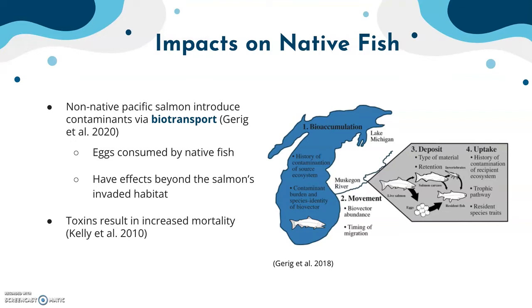In a study in the Great Lakes in Lake Michigan, the Pacific salmon were introduced rather than naturally invasive. But there was still bioaccumulation of contaminants from the introduced Pacific salmon, and this ends up having effects outside of the salmon's invaded habitat because both the salmon and the smaller fish move, resulting in bioaccumulation in surrounding habitats as well.